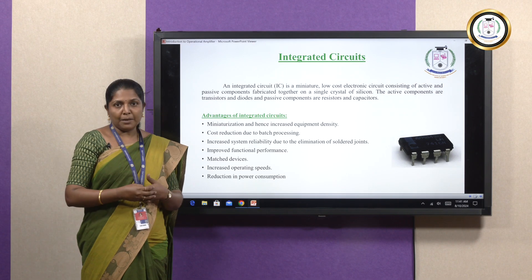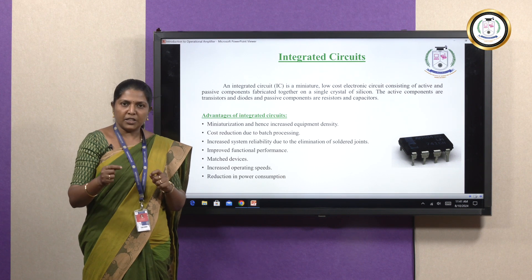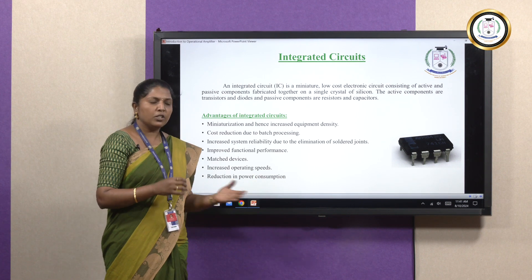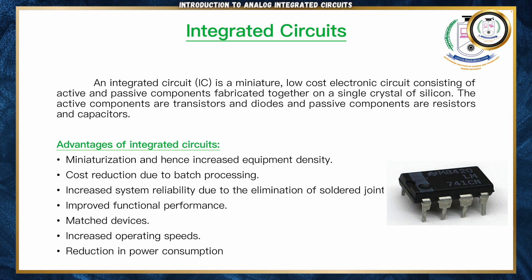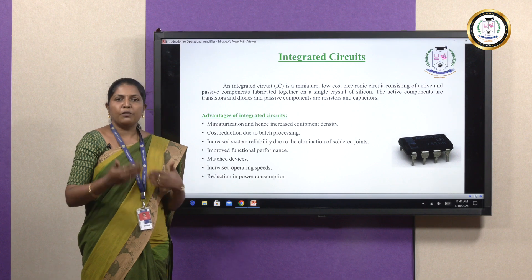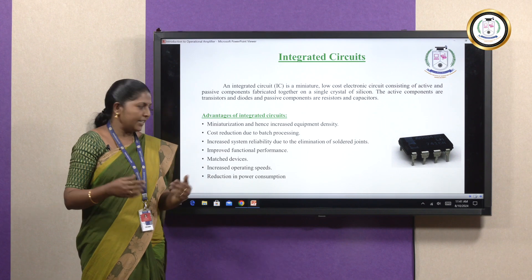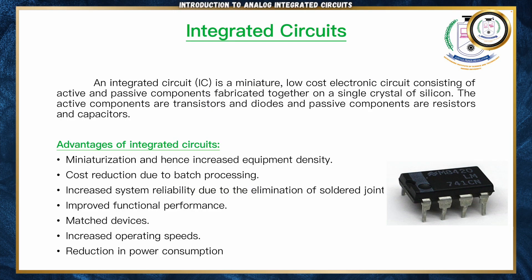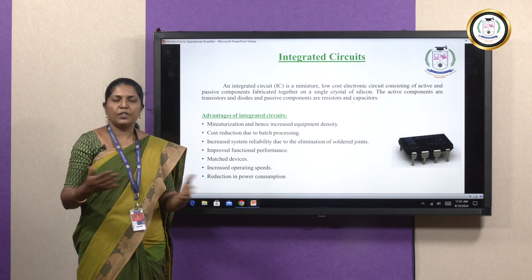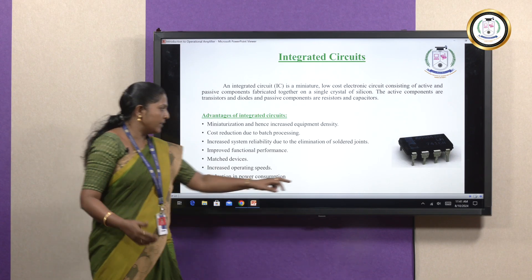The third advantage is reliability. When compared to normal connections, these ICs don't require any soldering joints, so they are reliable and the functions are improved. Next, they can be matched with any kind of devices. When using an IC, the speed of the device will obviously be increased. Lastly, it consumes less power. These are the advantages of ICs which make them usable for most electronic appliances today.